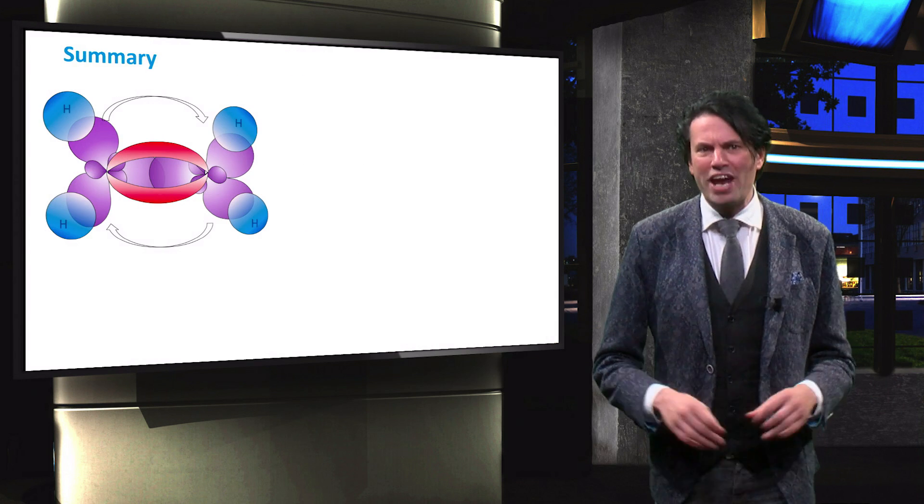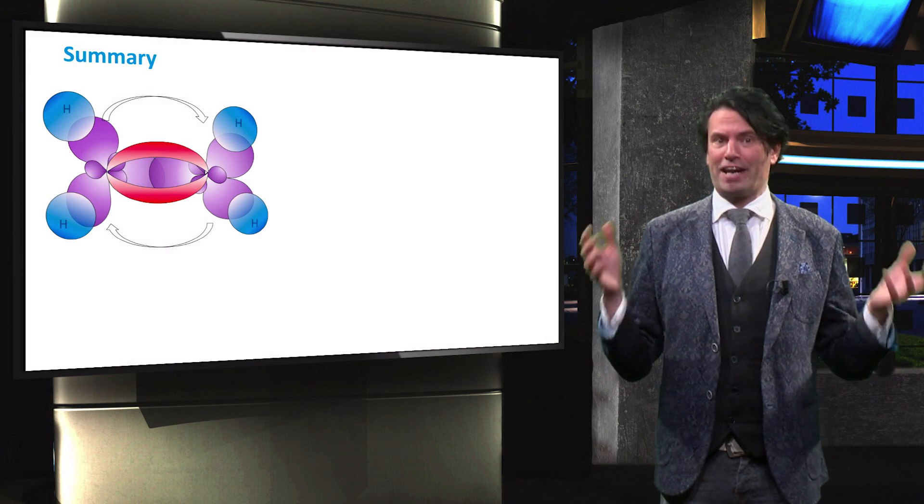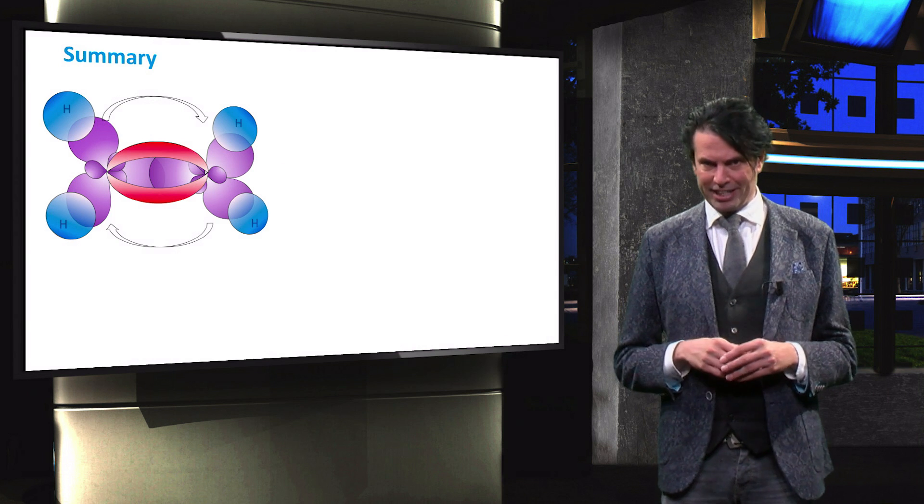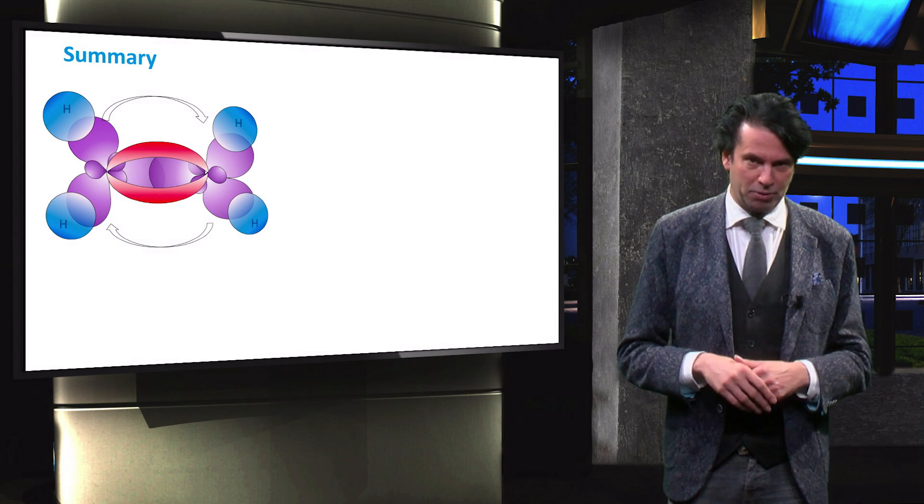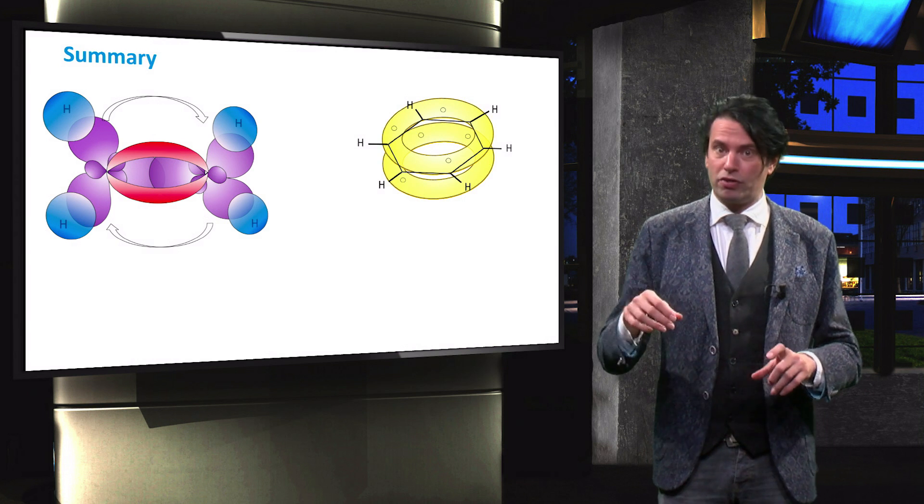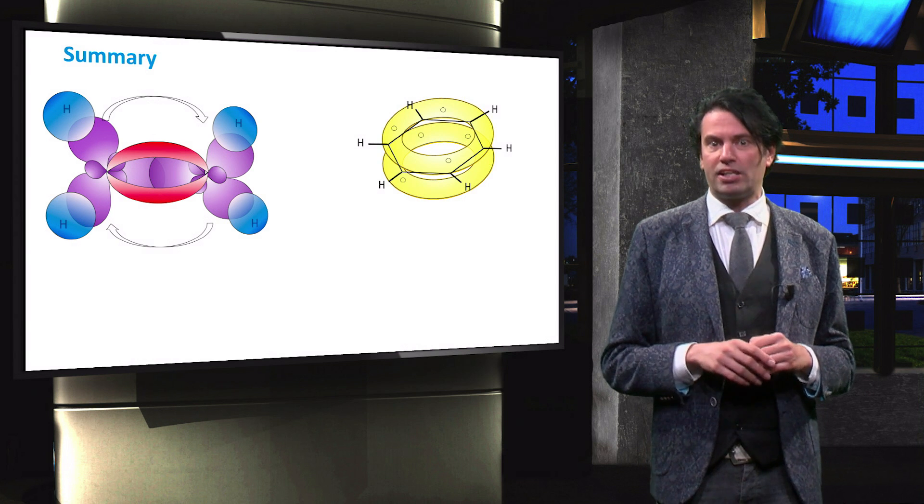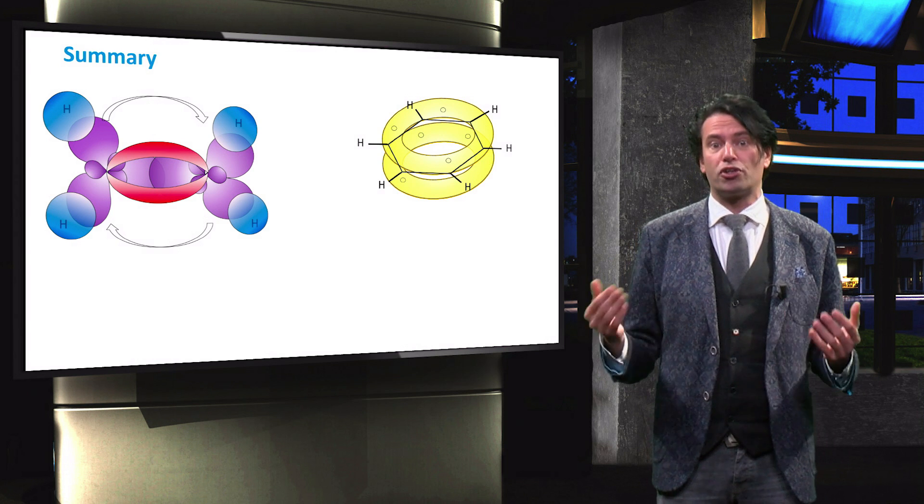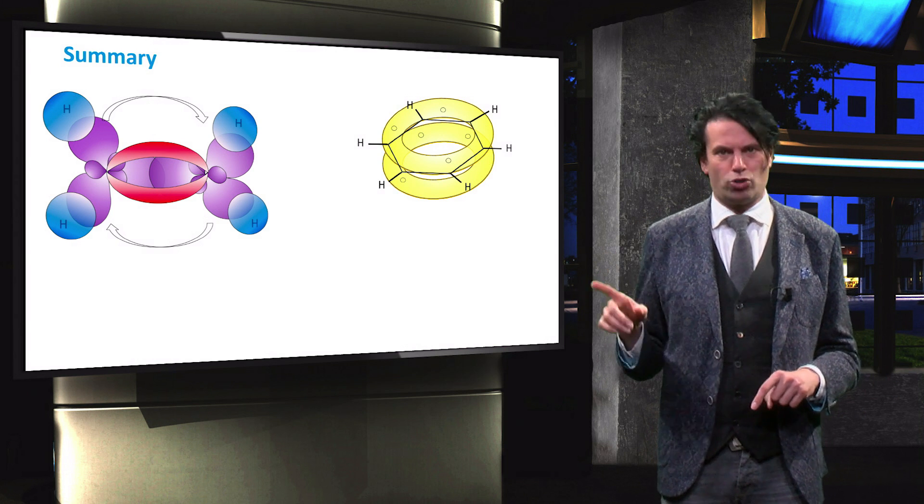To summarize this video, we have explored the mechanism of carrier transport in organic photovoltaics through bonding of unsaturated hydrocarbons. Delocalized pi orbitals and the consequent formation of molecular orbitals is caused by the constructive and destructive overlap of the pz orbitals.